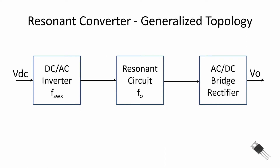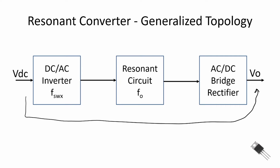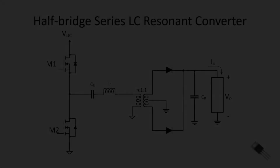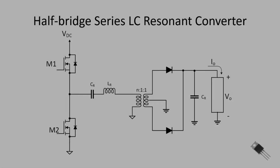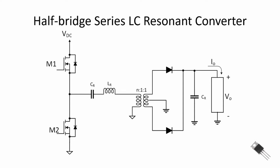Here's a block diagram of our generalized resonant converter, and in this video we are going to relate the output to the input. As a review, here's the circuit schematic for our half bridge series LC resonant converter. We're going to derive an equation that relates our output voltage V sub O to our input bus voltage VDC.